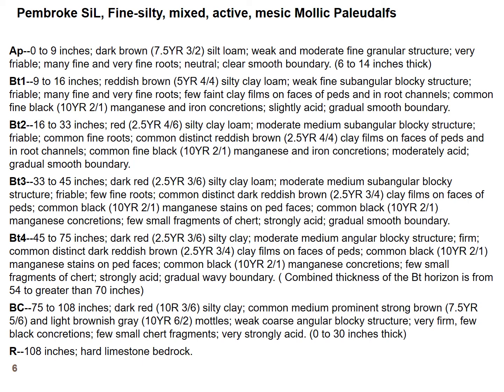Tell me in the chat what the lowercase T stands for in a Bt horizon, if you can remember from last week. Lowercase T stands for an accumulation of clay. So here we have four horizons that have an accumulation of clay: a Bt1, a Bt2, a Bt3, and a Bt4. The reason we have four different clay horizons is because they may have different colors — for example, the first Bt is reddish brown, the second is solid red, the third is dark red. There's also a difference in texture: Bt3 has silty clay versus the Bt above it which has silty clay loam, meaning there's a difference in clay percentage. As we go deeper, generally we see a pickup in clay.